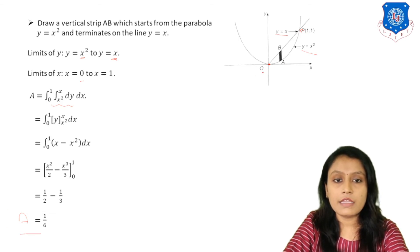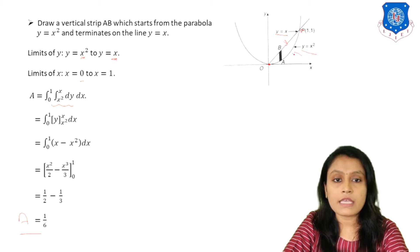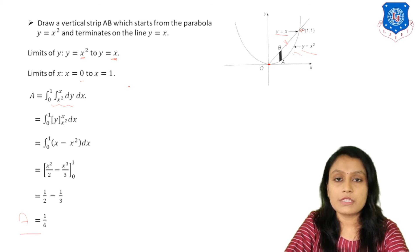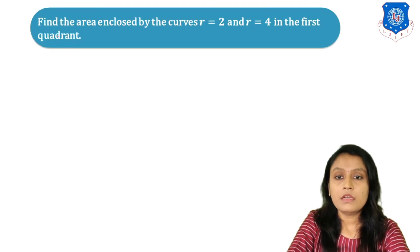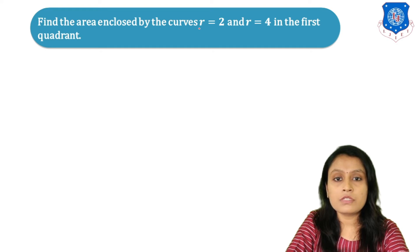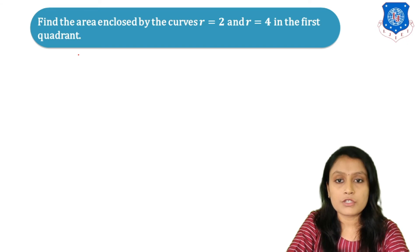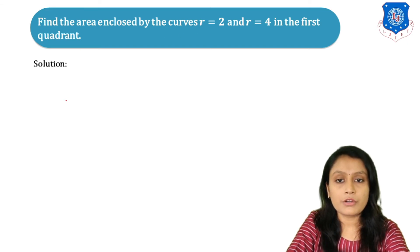So this is the area bounded between the line Y equals X and the parabola Y equals X squared, which equals 1/6. The next example is: find the area enclosed by the circles R equals 2 and R equals 4 in the first quadrant. This is an example in polar coordinates.